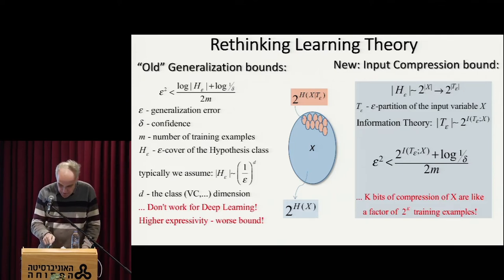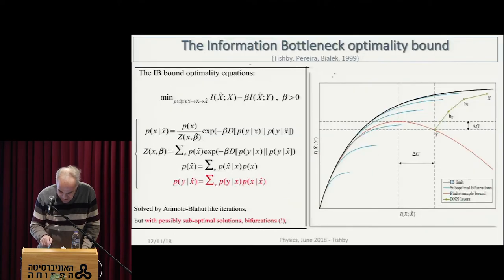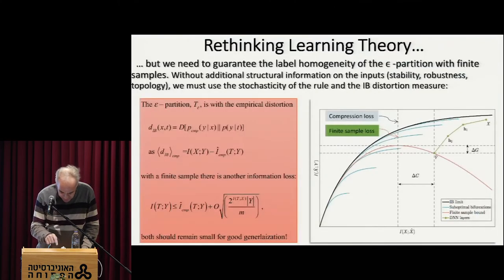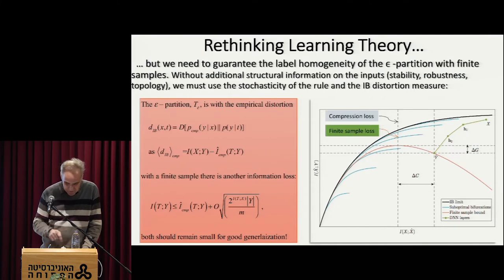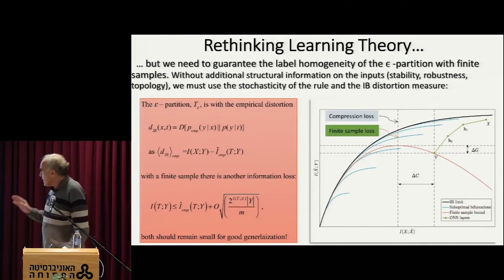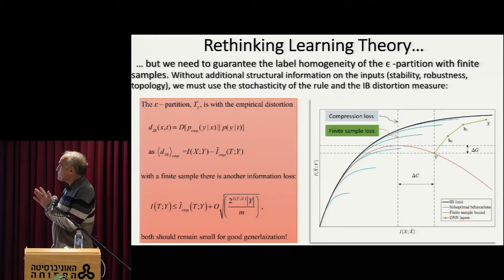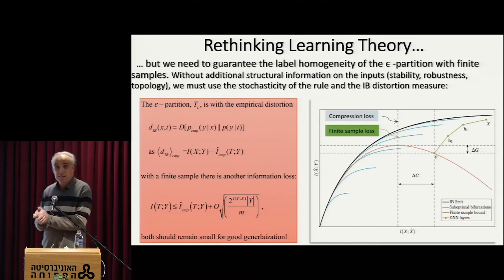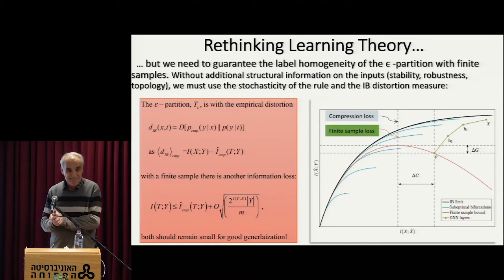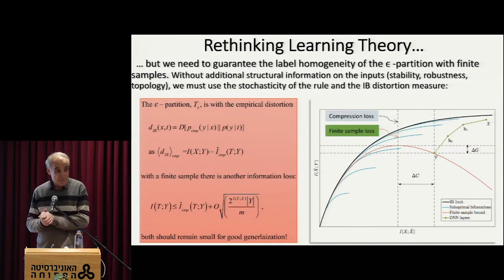This very simple bound tells us something interesting. There is always — so far I completely ignored the fact that I don't see all the data, that there is actually a sample. This is of course a big issue in learning theory. I can't really estimate the I's because I don't have the joint distribution of X and Y. What I have is only a sample of the joint distribution of X and Y.